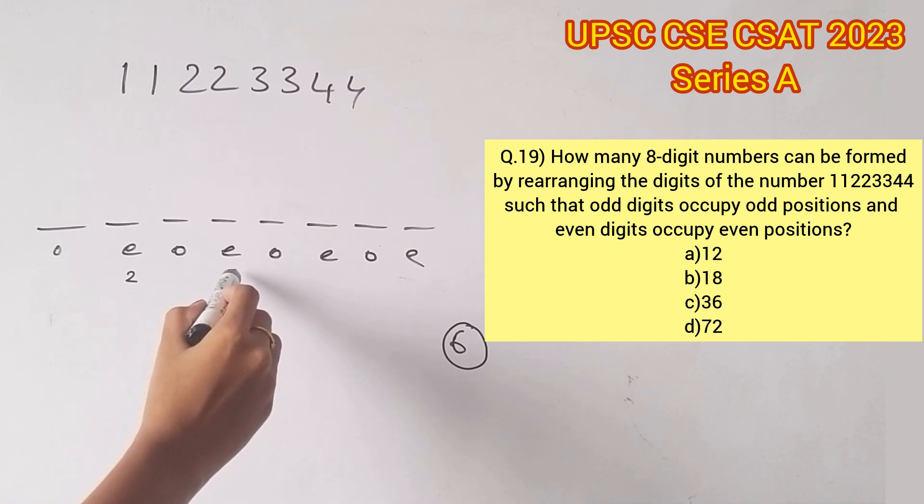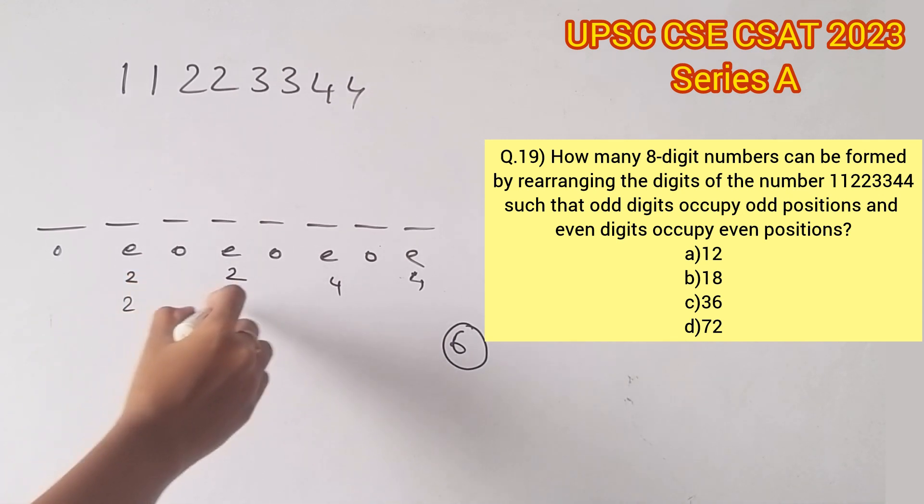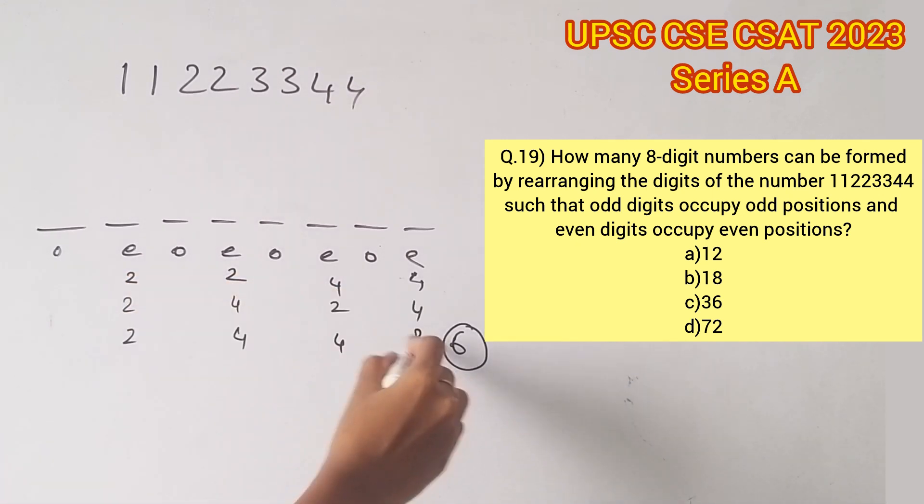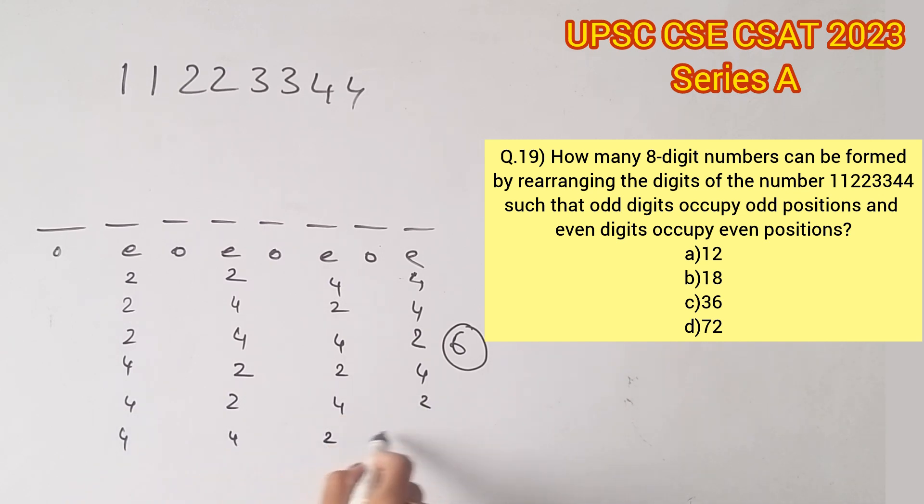as well, let's consider 2 in the first even place. This leaves us with three different possibilities with the remaining digits that are 2, 4, 4. The same will happen if you consider 4 in the first even place. You will get three other possibilities by using the remaining digits. So with this, the even digits can also be jumbled among